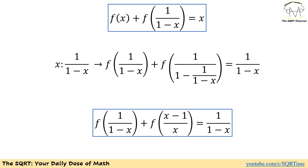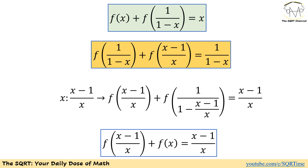Now we have two expressions: the first one (in green) is the one we got from the original problem, and the second one (in orange) is the one we got after substitution. Reviewing what we have: f(x), f(1/(1-x)), and an unwanted term f((x-1)/x) that we need to eliminate.